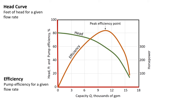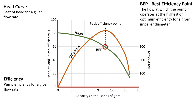If we come down from that peak efficiency point to where it intersects the head curve, we can find the best efficiency point — the BEP. The best efficiency point is the flow at which the pump operates at the highest or optimum efficiency for a given impeller diameter. If we come across to the left from that point, we see that the head is about 60 feet. If we come down from that point, we can see that the flow at that condition is approximately 10,500 gallons per minute.